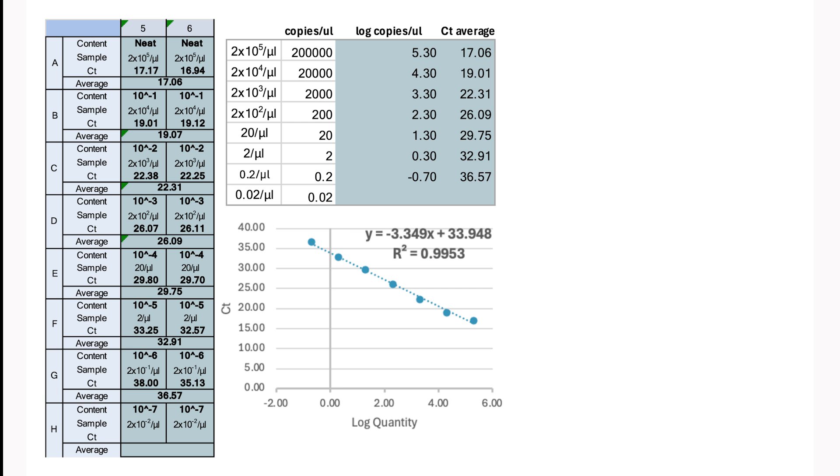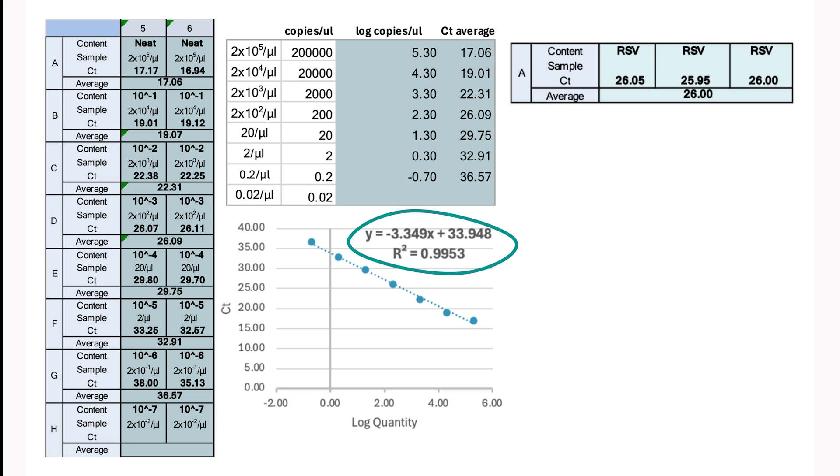We can now use our standard curve to interpolate the unknowns, where we convert the CT values of our unknown test samples into absolute values. Suppose we have this standard curve and the CT value of our unknown sample is 26. We immediately see that we might expect our unknown sample to contain around two log copies per microliter.